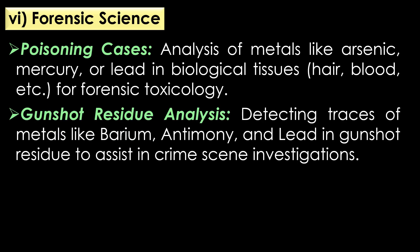Applications of atomic absorption spectroscopy in forensic science: AAS is useful for analysis of poisoning cases and gunshot residue analysis. AAS is used for the analysis of metals like arsenic, mercury, or lead in biological tissues such as hair and blood for forensic toxicology. In gunshot residue analysis, AAS is very helpful for detecting traces of metals like barium, antimony, and lead to assist in criminal scene investigations.